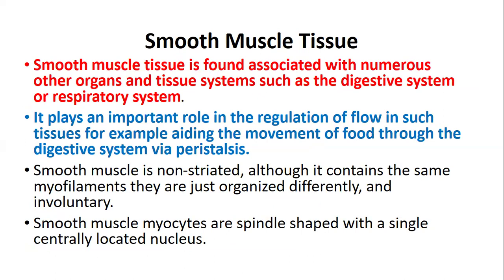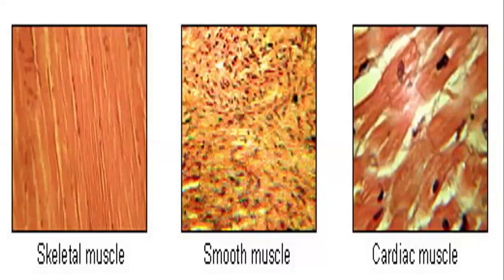Smooth muscle tissue is found associated with numerous organs and tissue systems, such as the digestive and respiratory systems. It plays an important role in the regulation of flow in such tissues—for example, aiding the movement of food through the digestive system in what is known as peristalsis. Smooth muscles are non-striated, although they contain the same filaments as striated muscles, just organized differently. They are involuntary, meaning you cannot control them—they operate independently.